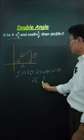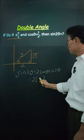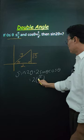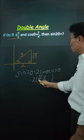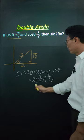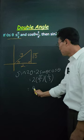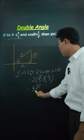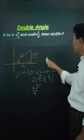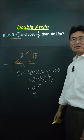So it's going to be 2 times sine, opposite over hypotenuse, root 5 over 3 times cosine, adjacent over hypotenuse, which is 2 over 3. And then if you multiply this out, you get 4 root 5 all over 9, and that's what sine of 2 theta is equal to.